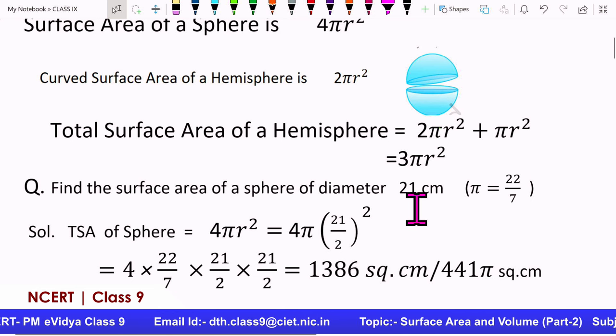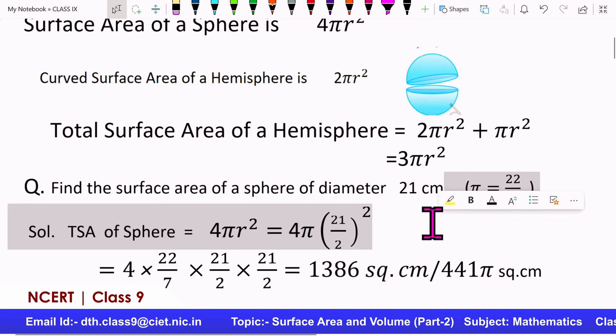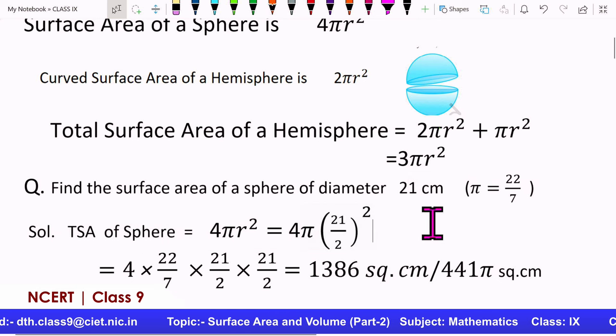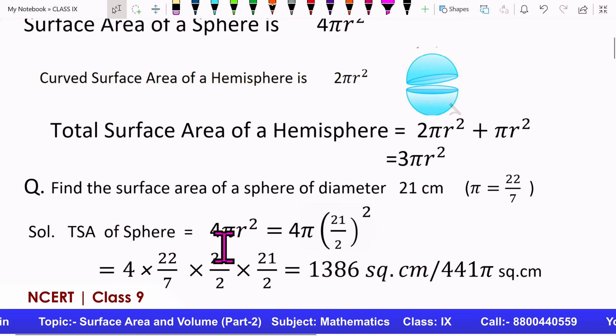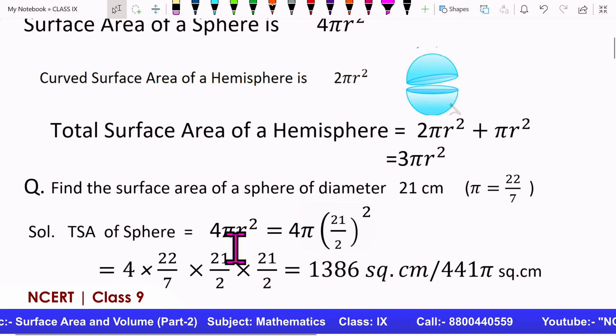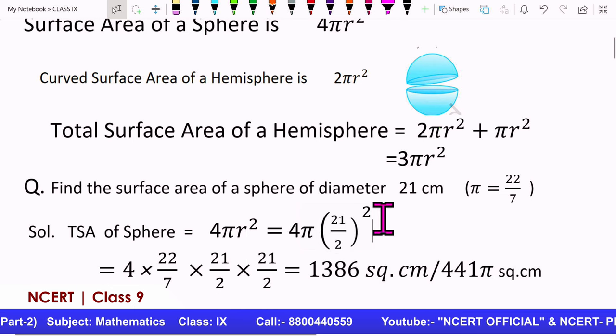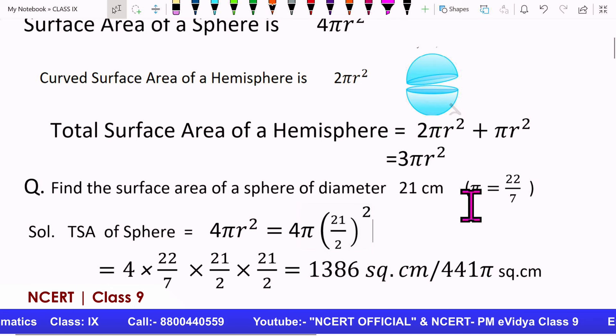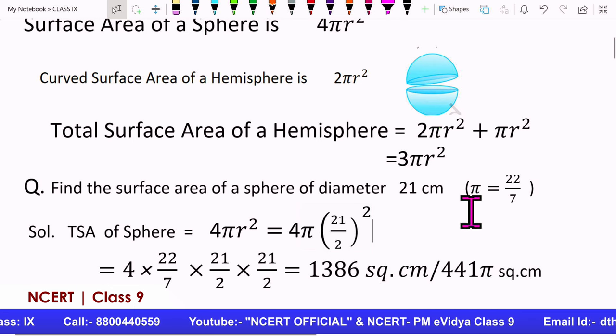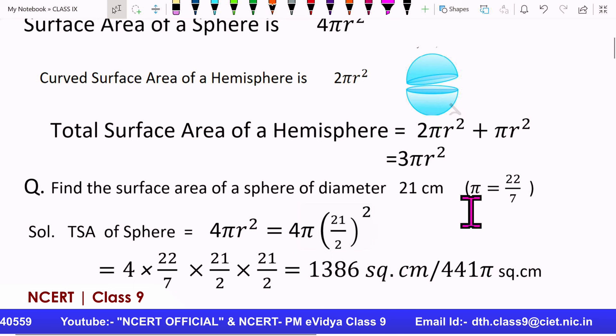Here, the surface area of a sphere of diameter 21 centimeters is given. 21 centimeters is the diameter of that sphere. So what will the radius be? Radius will be half the diameter, that will be 21/2. So now we need to apply this formula 4πr². We'll use this formula. So we have the value of r as (21/2)². Now, in brackets something is written here. That is the value of π. π, as discussed in the last class, is an irrational number.